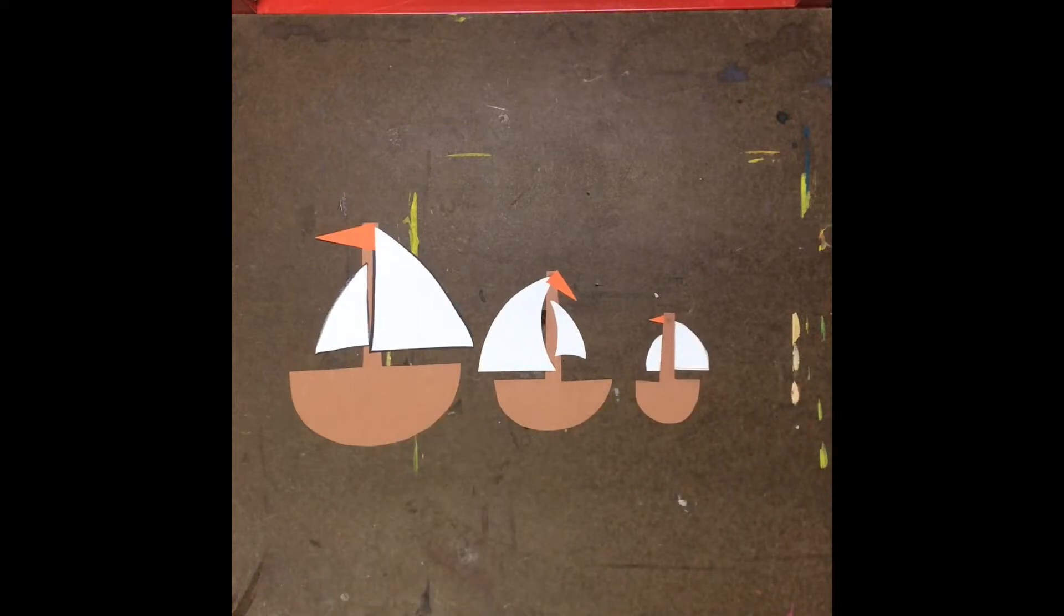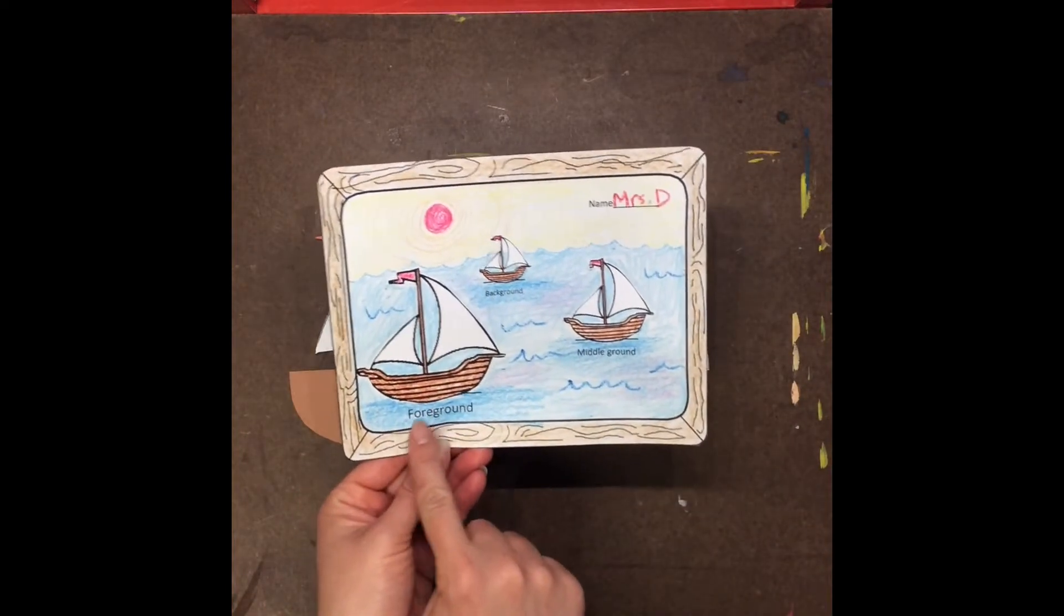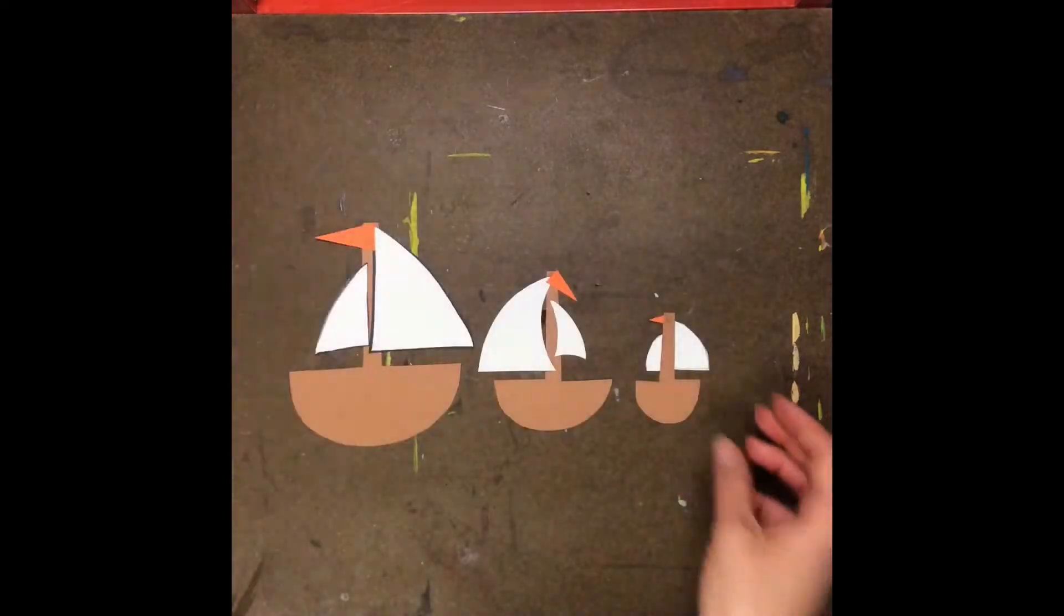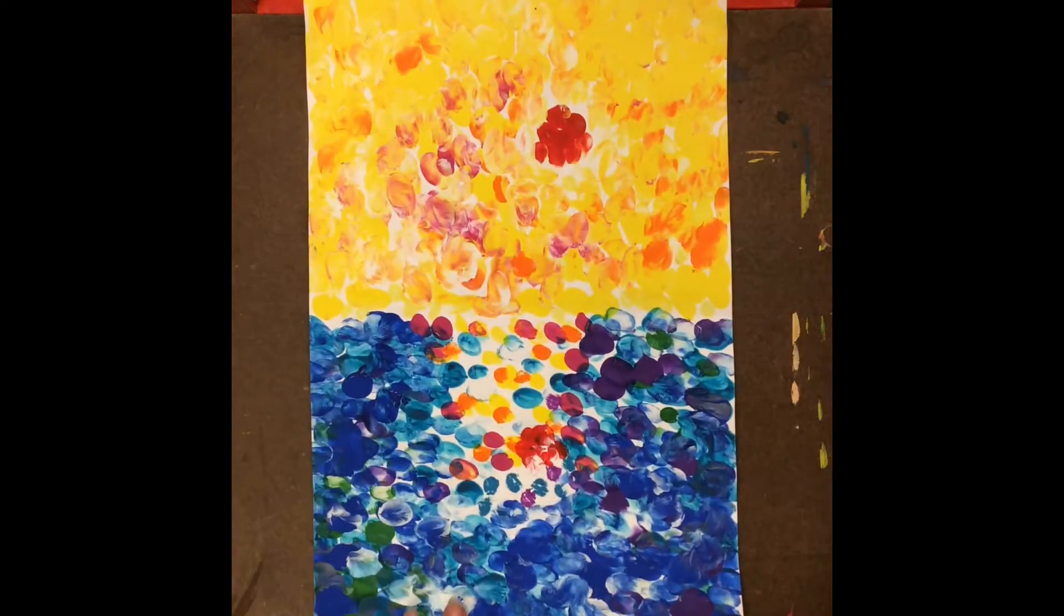Now I have one of each size. Now I'm going to have to really remember my practice page so that I put the correct boat in the foreground, middle ground, and background. So before I do any more gluing I'm going to lay my pieces out.